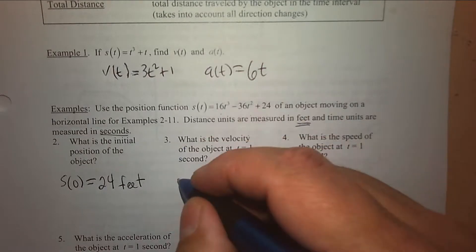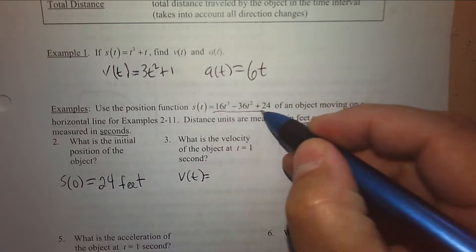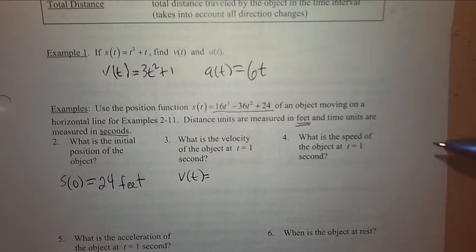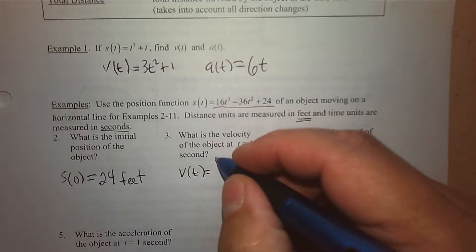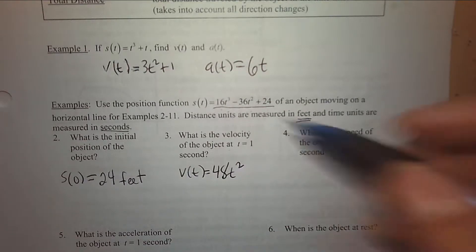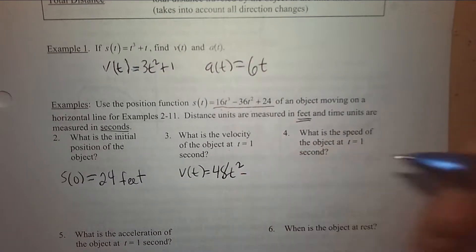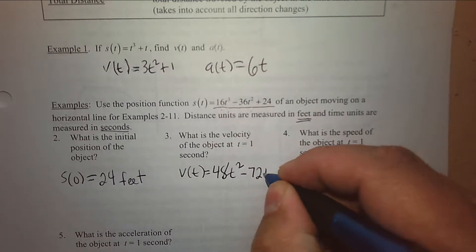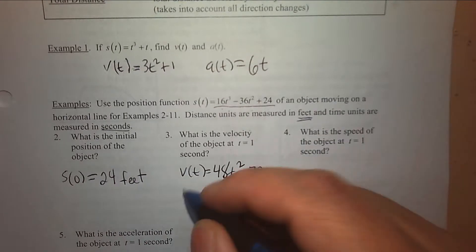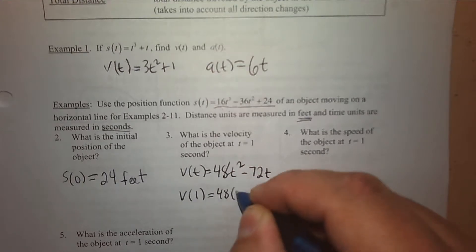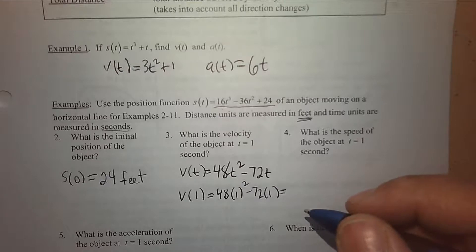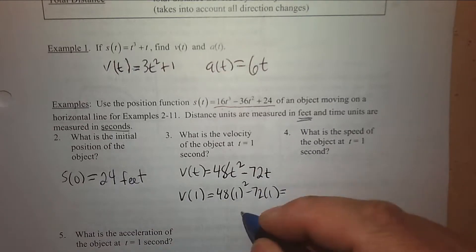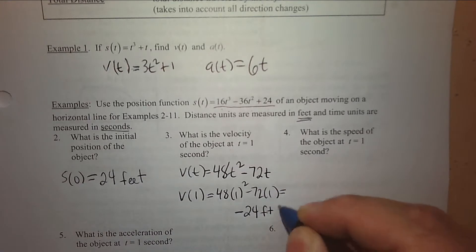What is the velocity of the object at t = 1 second? First I need the velocity function. Taking the derivative: 3 × 16 = 48, so 48t². Then 2 × 36 = 72, so minus 72t. The derivative of 24 is zero. Then plug in t = 1: 48 minus 72. The velocity when t = 1 is negative 24 feet per second.